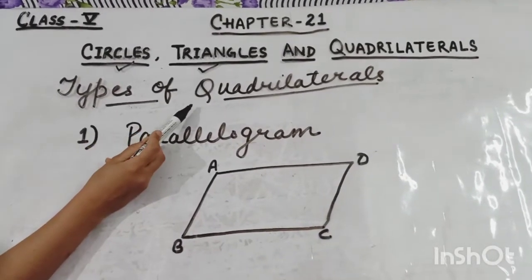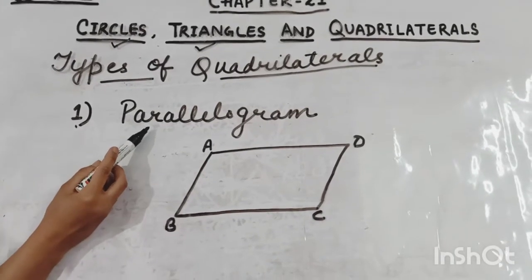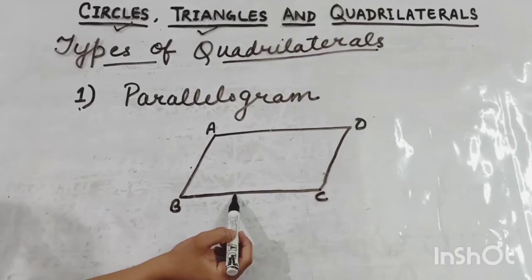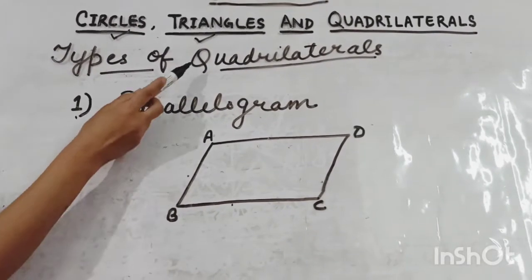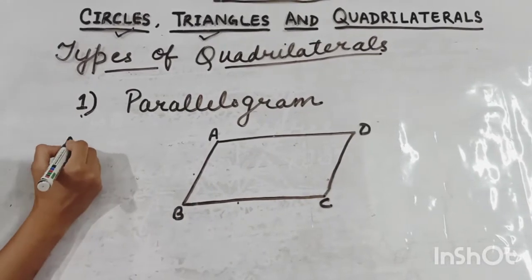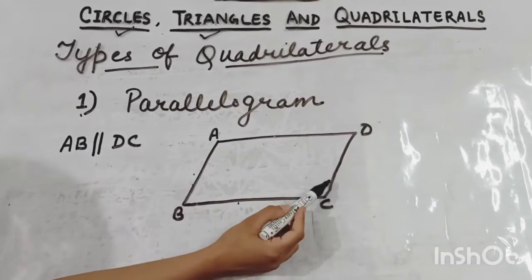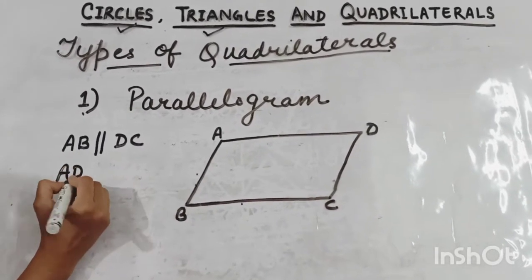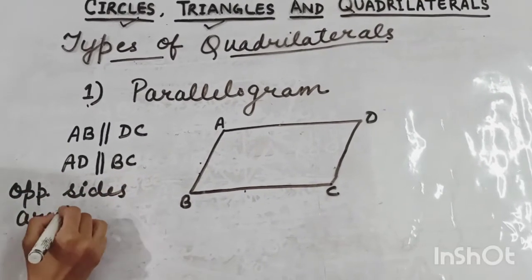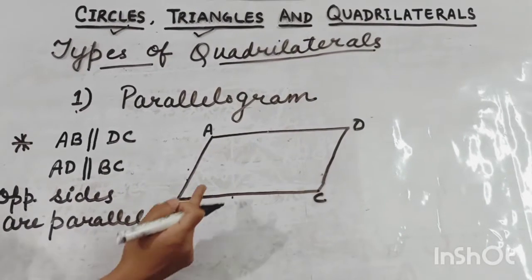Next, students, your types of quadrilaterals. The first type is the parallelogram. Now we will talk about the properties of a parallelogram. A parallelogram is also a quadrilateral. In a parallelogram, both pairs of opposite sides are parallel — meaning AB is parallel to DC, and AD is parallel to BC.